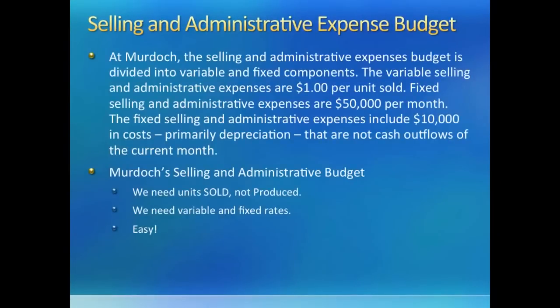Next in the series of estimating expenses is the selling and administrative budget, also called the non-manufacturing expenses budget or operating expenses budget. This budget will complete our compilation of costs at Murdoch. At Murdoch, we are given a variable expense of $1 per unit and a fixed expense of $50,000 a month. Notice an important thing: the starting point for this budget should be number of units sold, not number of units produced, because you pay sales commission on what you sell, not what you make.